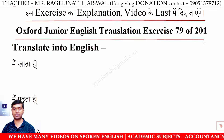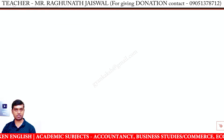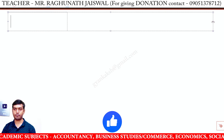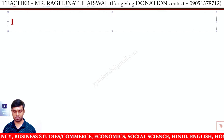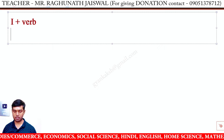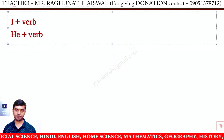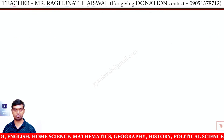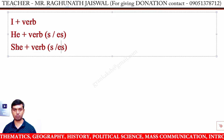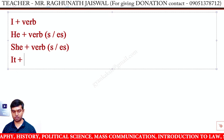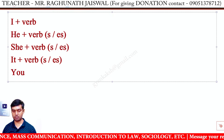Oxford Junior English Translation Exercise 79 of 201 — translate into English. अब देखिए यहाँ पर हम लोग tense का इस्तेमाल करने वाले हैं। सबसे पहले इस exercise से related कुछ concepts हैं जो मैं आपको बता देता हूं। जब हम लोग present tense use कर रहे हैं, I के साथ verb normal form में रहता है। It के साथ जो verb का इस्तेमाल होता है उसमें S लगा हुआ है। It plus verb S या ES.